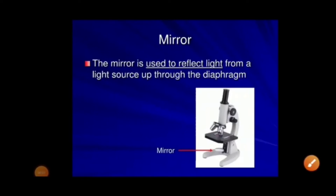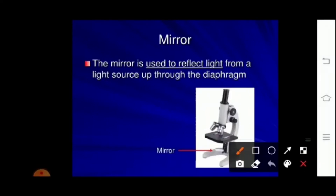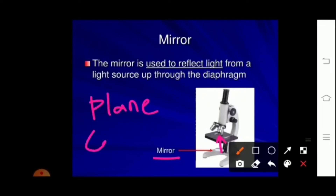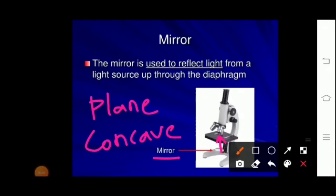The last part of the microscope is the mirror. Its function is to focus light on the stage. This mirror has two surfaces: one surface is a plane surface, called the plane mirror, and the other surface is concave, called the concave mirror. The mirror is used to reflect light from the light source up through the diaphragm.